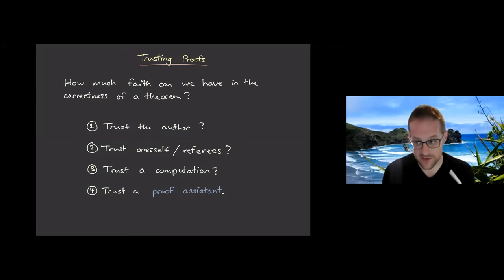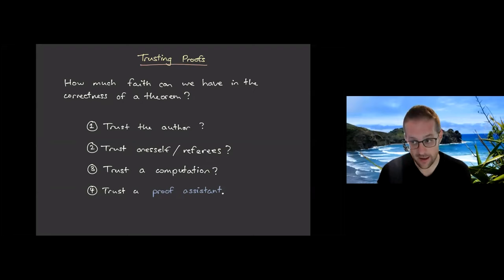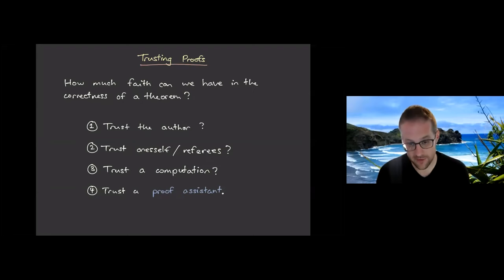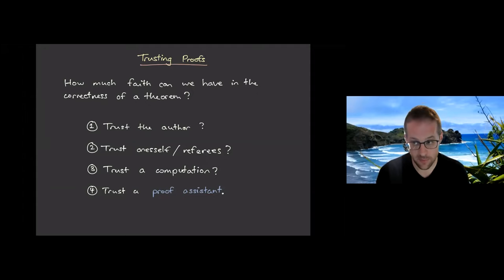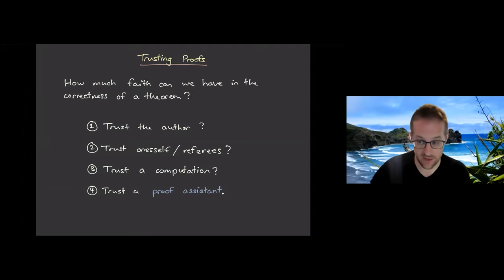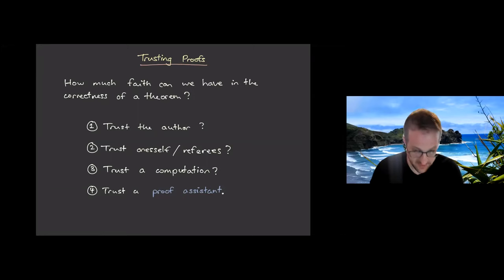So the question is: if you claim to have proved a theorem and you've got a 100-page proof, who do I need to trust to believe that? The first answer is I could just trust you. We do this in many cases — when someone claims they've proved something, even if peer review hasn't happened, we will often trust the person because of their reputation.